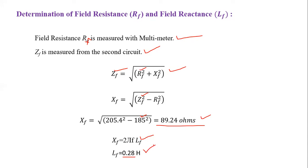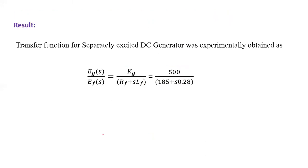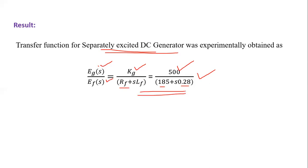Now we know all the electrical parameters and the generated EMF constant, so we can write the transfer function for the separately excited DC generator. The transfer function EG(s) / EF(s) = KG / (RF + s·LF), where KG = 500, RF = 185 ohms, and LF = 0.28 H. Substituting all values gives the mathematical representation — this is the transfer function of the separately excited DC generator. Thank you.